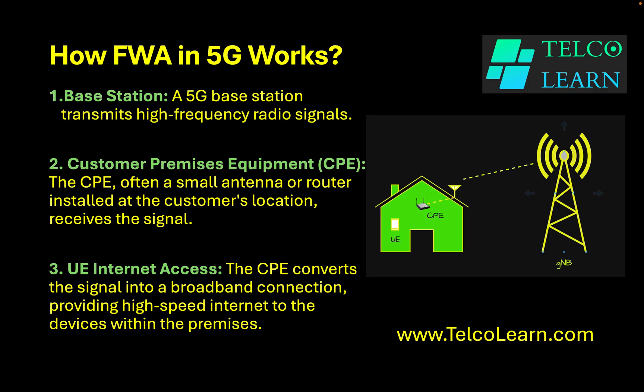First of all, let us talk about how FWA works in 5G networks. If you look at the picture, the gNodeB is radiating radio power and the typical coverage is beyond the end users. So end users are not able to get into the reach of the gNodeB and communicate with it directly.